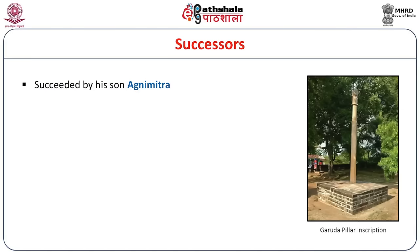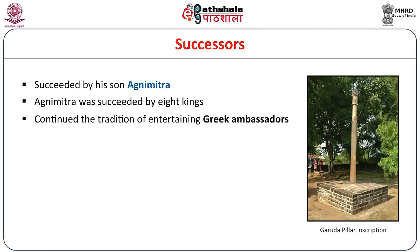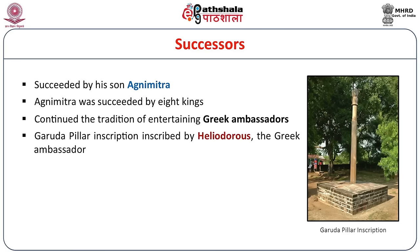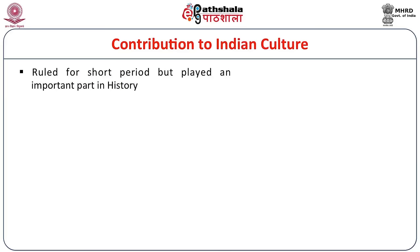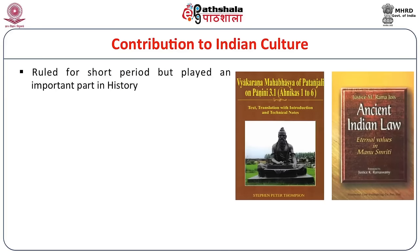Pushyamitra was succeeded by his son Agni Mitra. Agni Mitra was succeeded by eight kings who continued the tradition of entertaining Greek ambassadors. One of the Greek ambassadors, Heliodorus, issued a Garuda pillar inscribed in honor of the god Vasudeva. Devabhuti was the last ruler, assassinated by the Kanva ruler Vasudeva Kanva. So far we have discussed the political history of the Sungas, from Pushyamitra up to the last ruler.